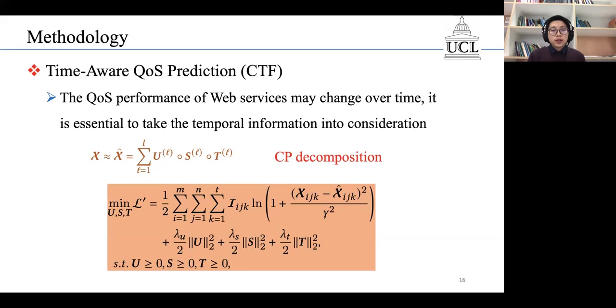The third dimension is used to capture the temporal information. Then we apply CP decomposition to factorize X into three low-rank factor matrices U, S, and T.